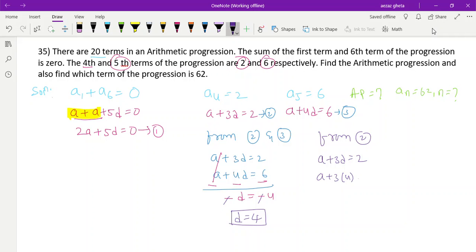Now take equation 2: a plus 3d equals 2. Substituting d equals 4, we get a plus 3 times 4 equals 2. So a plus 12 equals 2, which gives a equals 2 minus 12, so a equals minus 10.